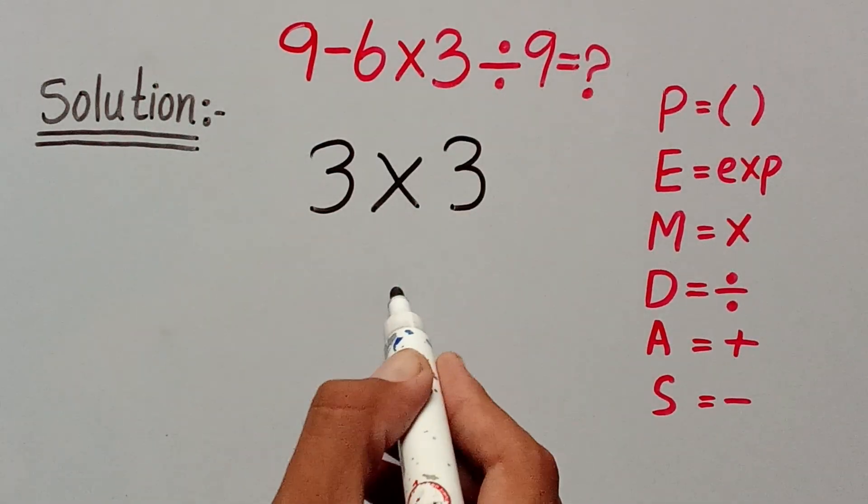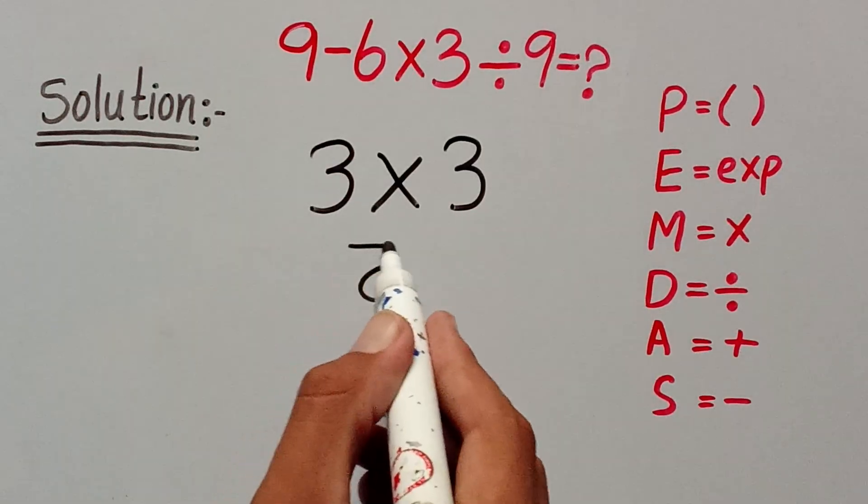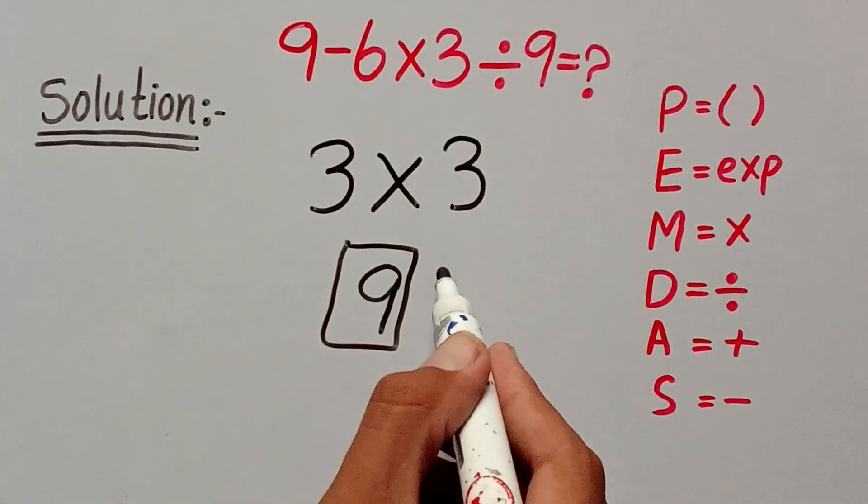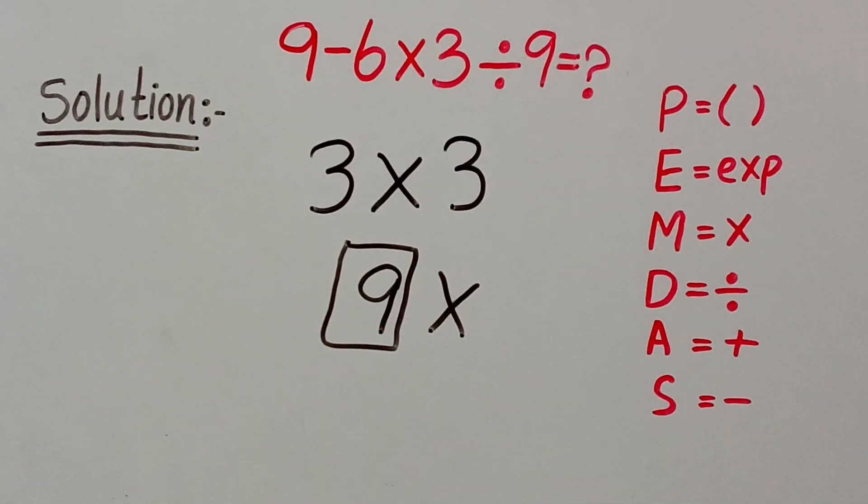And 3 times 3 equals 9. But guys, trust me, this answer is absolutely wrong.